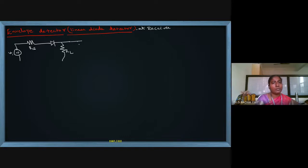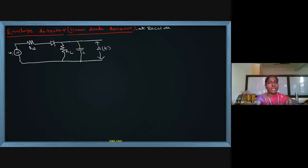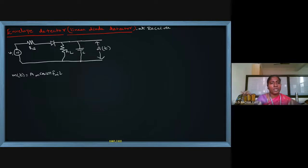R_L is the output side resistor, and the output across the capacitor is the low pass filter operation — this output is the original message signal. Now, if m(t) is the message signal — A_m·cos(2πf_m·t) — and the carrier c(t) is A_c·cos(2πf_c·t), we know that the message is a low frequency signal and the carrier is a high frequency signal.